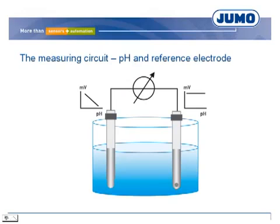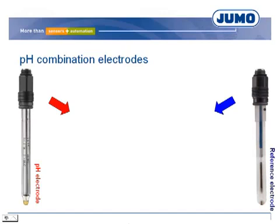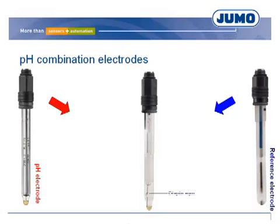The picture shows the measuring circuit principle with pH and reference electrode. pH and reference electrodes come together in so-called pH combination electrodes. Constructionally, the reference electrode is built around the pH electrode. The pH combination electrode contains the components of the pH electrode — membrane glass, internal electrolyte, and internal conductive element. It also contains the components of the reference electrode: diaphragm, reference electrolyte, and reference conductive system.